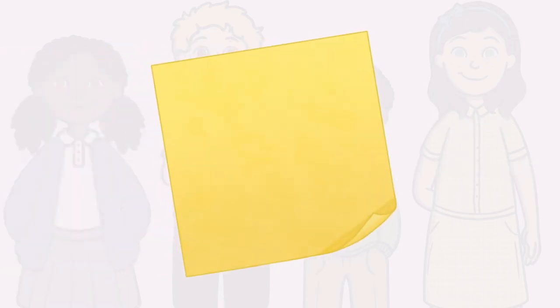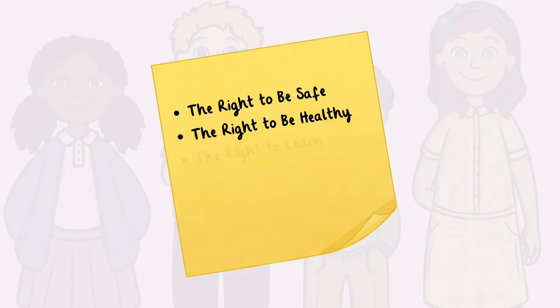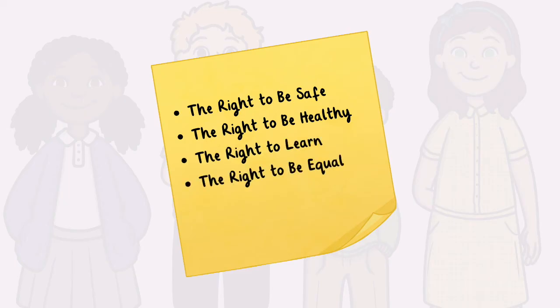Here are some examples of human rights: the right to be safe, the right to be healthy, the right to learn, the right to be equal, and the right to have a family.